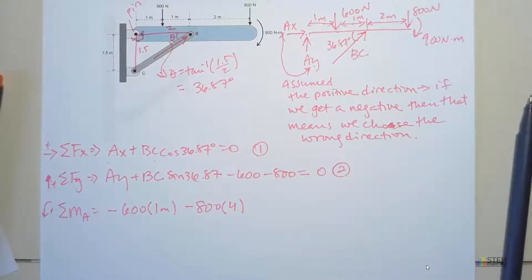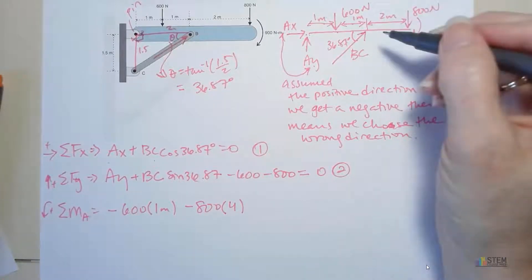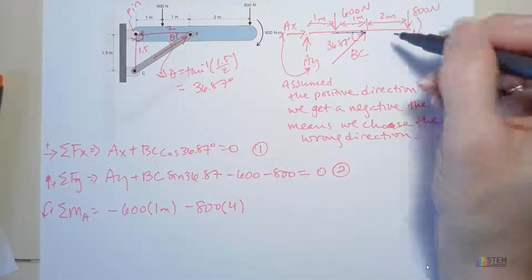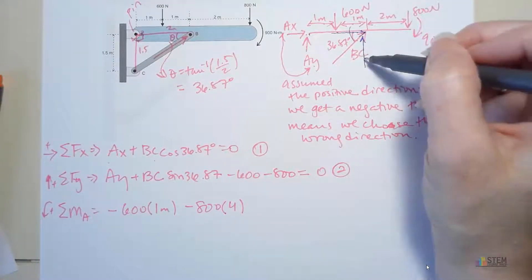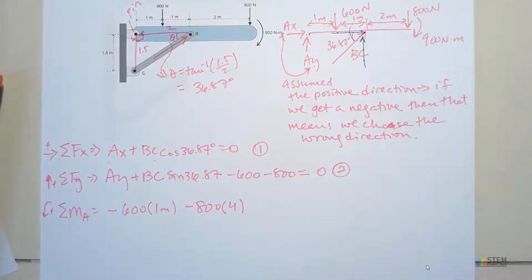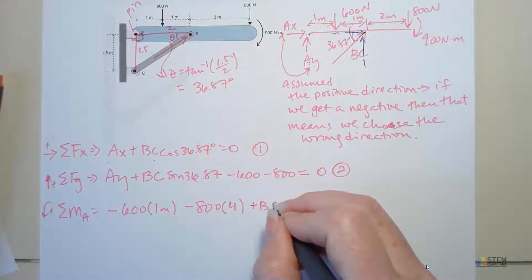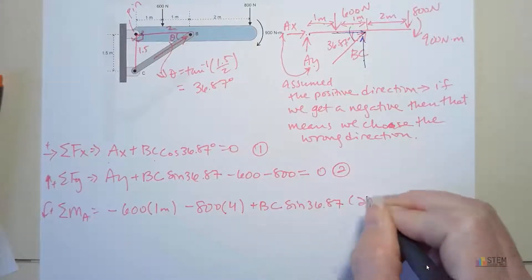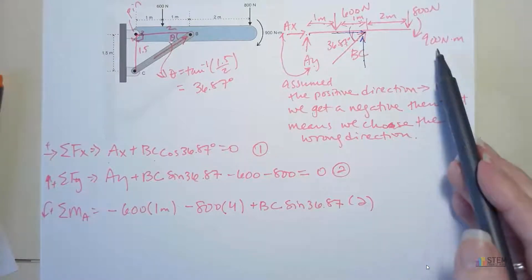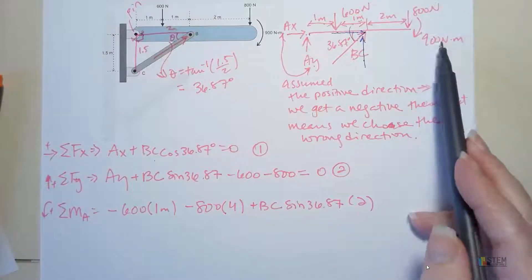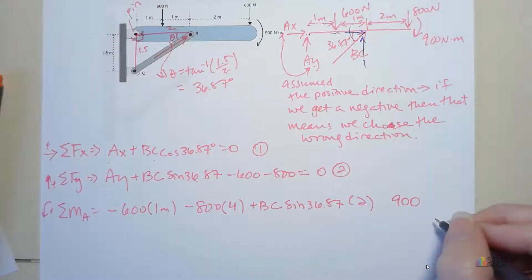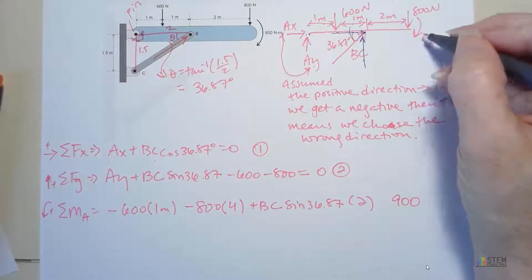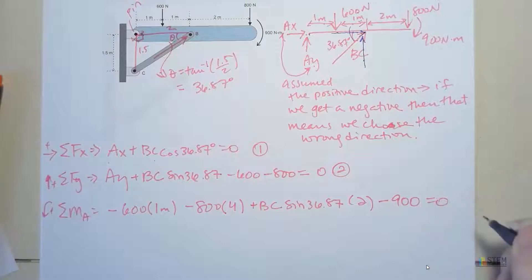Then last couple of things, we've got BC here. Now what components of BC do we need to worry about? Do we need to worry about the X component? That's not creating a moment, right? Because it goes through A. So we don't worry about that one, but we do need to worry about this one. We need the distance from here to here, which is 1 plus 1, so 2. And the force is BC sine 36.87. That's going to be positive. And then finally, what about this? I've got this couple moment hanging out here at the end. That one we just put in the equation. It's already a moment, so you just put the number, so 900. And then check to see if it's positive or negative. This one's drawn in the clockwise sense, so that is negative. Make that equal to zero.